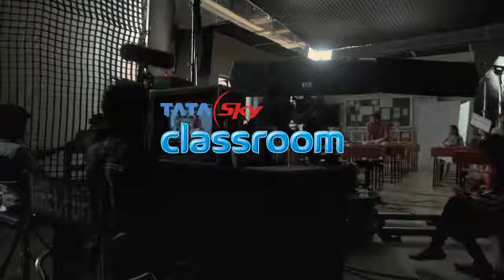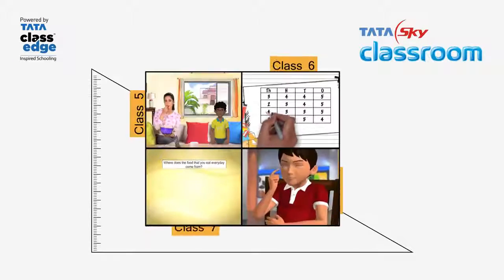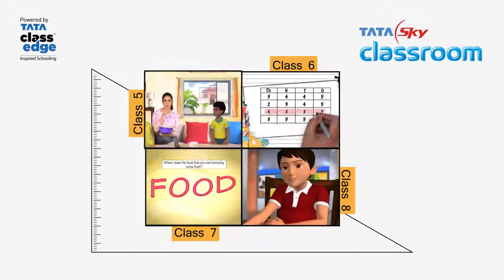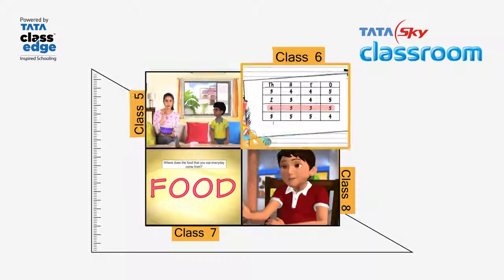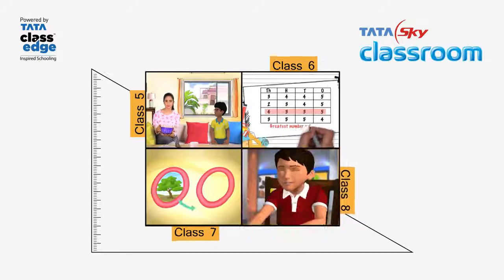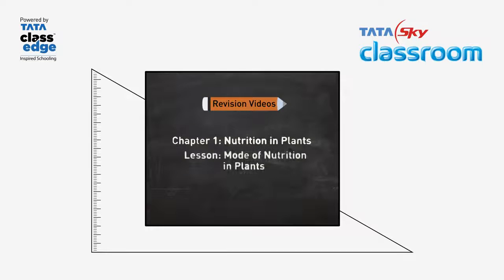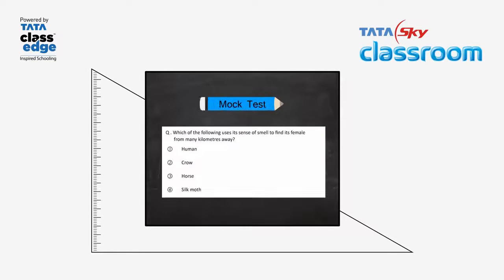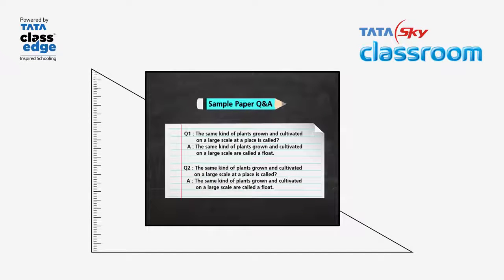Tata Sky Classroom. Now the syllabus is simple — learn from the TV. Class 5th to Class 8th, Maths and Science. And do exams. Revision videos, mock tests, and sample papers.